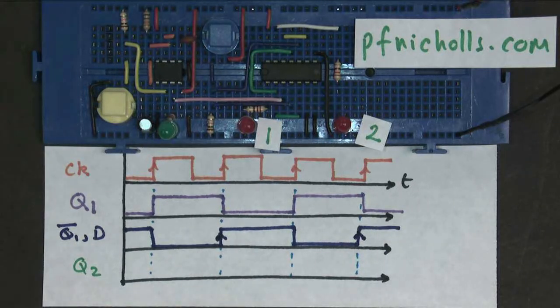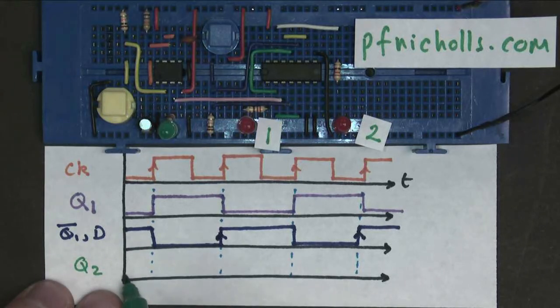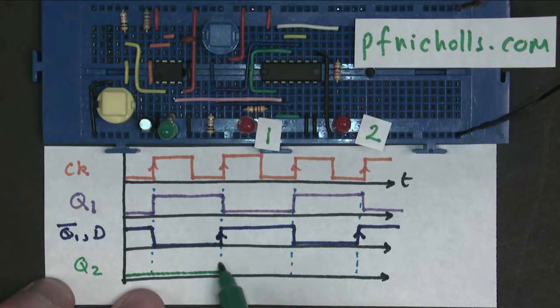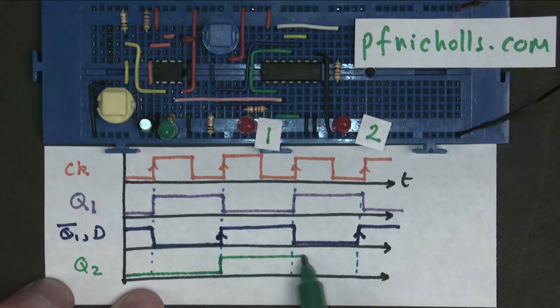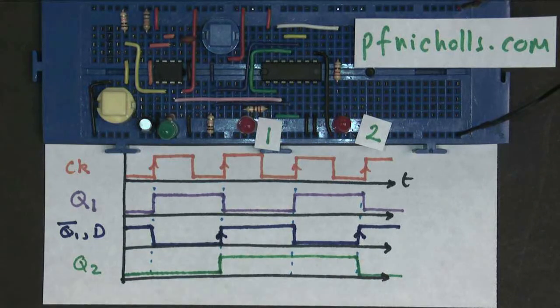So that means that we know a D-type flip-flop only changes state when on the rising edge of the clock. So it's originally zero, it changes state here, and it changes state here on this rising edge and this rising edge.